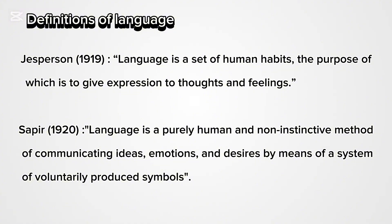Sapir, 1920, defined language as: 'Language is a purely human and non-instinctive method of communicating ideas, emotions, and desires by means of a system of voluntarily produced symbols.' Language is purely human, and non-instinctive — meaning not instinctual. It is a method of communicating ideas, emotions, and desires. 'Voluntarily' means that the human chooses to use language — by their own choice, voluntarily produced symbols.